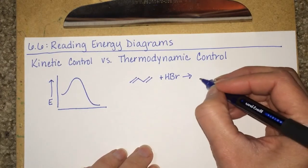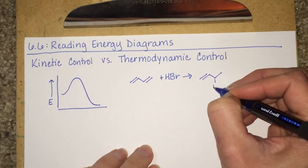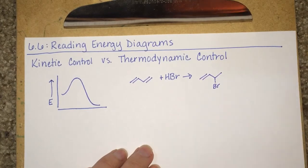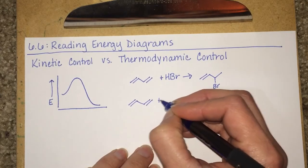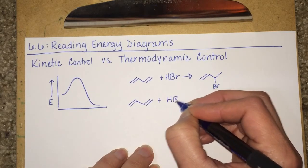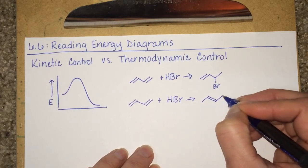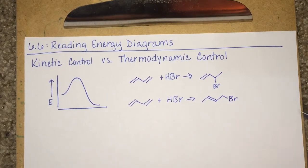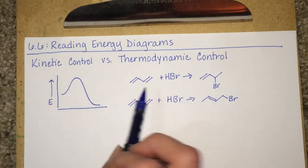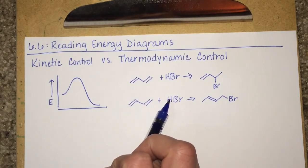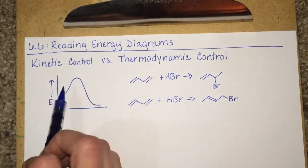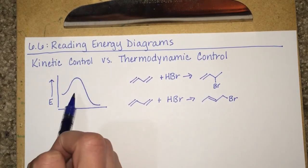So these two reactants, when combined together, they could give us two different products. So because we're starting with the exact same reactant, if we put these two reactions, plotted them on the same energy diagram, one on top of the other,